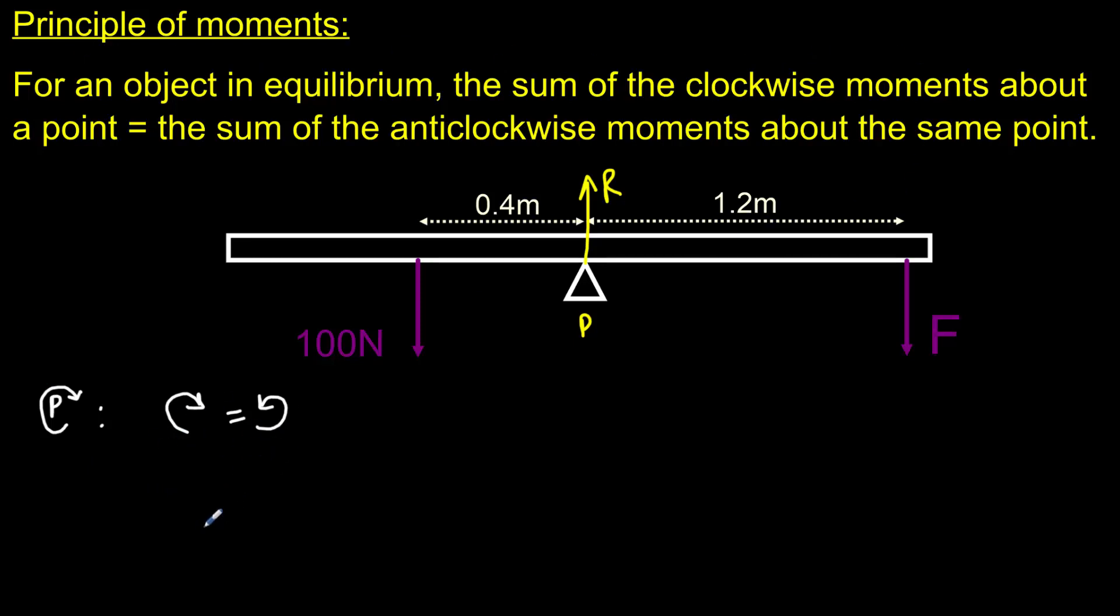So the first thing we would always do is to say clockwise moments are equal to anticlockwise moments around that pivot point P. That is the principle of moments. I like to write it in shorthand like this. So the first thing we do is we work out which of our forces are causing clockwise turning moments. So to do that, take each force in turn, and imagine that it is the only force acting. Which direction would the beam rotate in? So let's start with our unknown force F that we're trying to find out. If that was on its own, you could see that that would pull down this side, and the beam would rotate clockwise. So that is our clockwise moment F. And we multiply that by the perpendicular distance, which is 1.2. That will be equal to our anticlockwise moment, which you can see here. So here, the 100 Newton force would cause an anticlockwise rotation if left to its own devices.